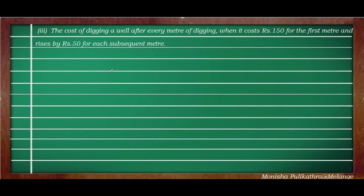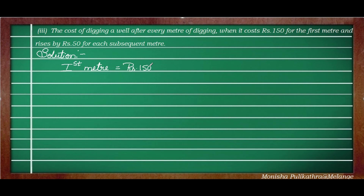Coming to the third question: the cost of digging a well after every meter when it costs Rs.150 for the first meter and rises by Rs.50 for each subsequent meter. For the first meter, the charge is Rs.150 — this is the first term A or T1.